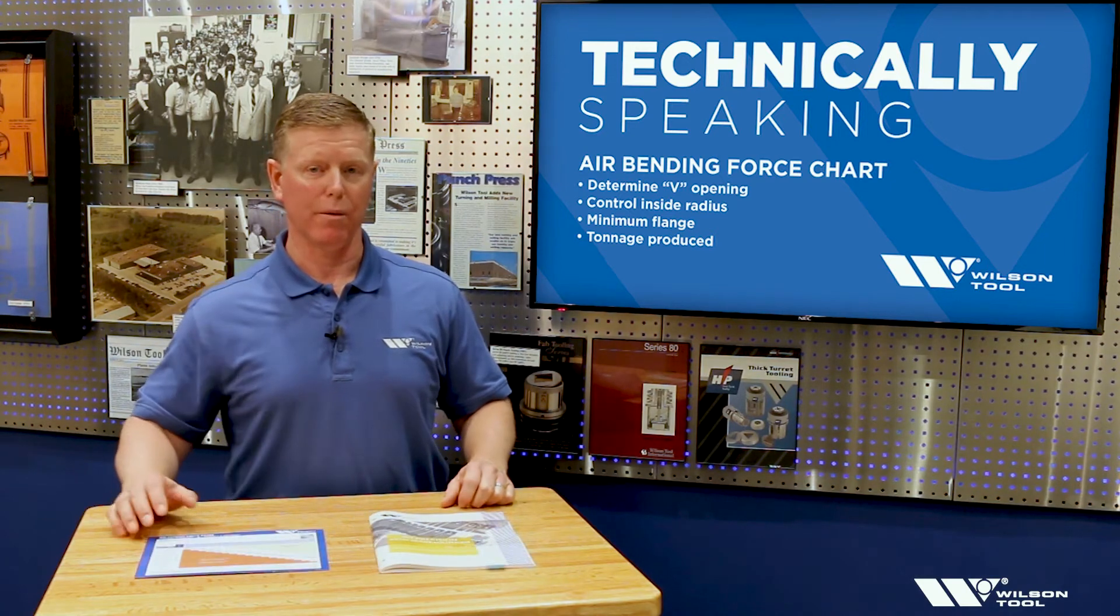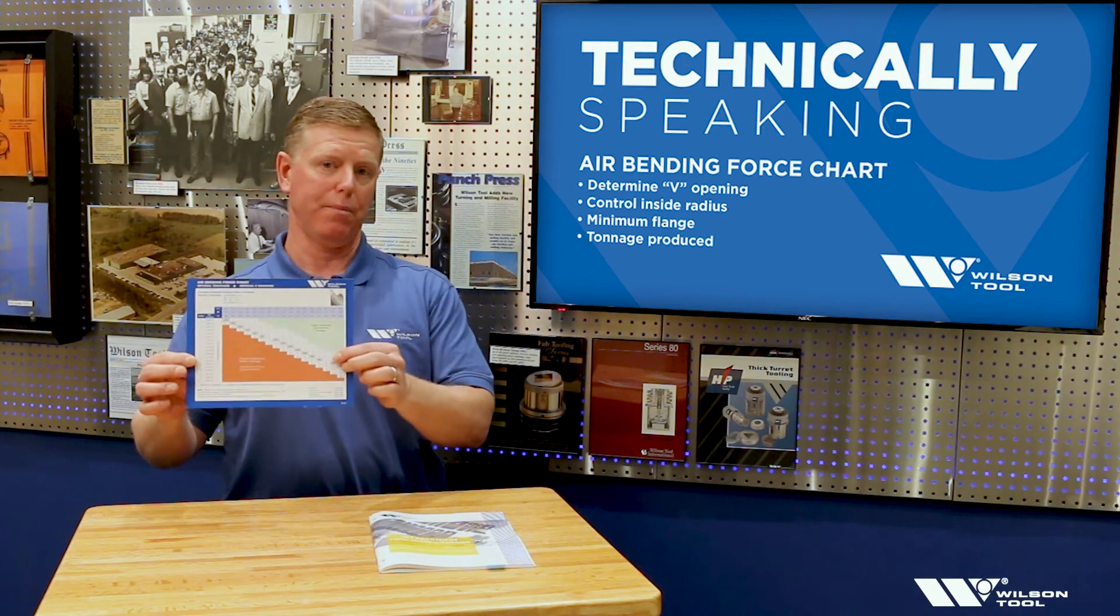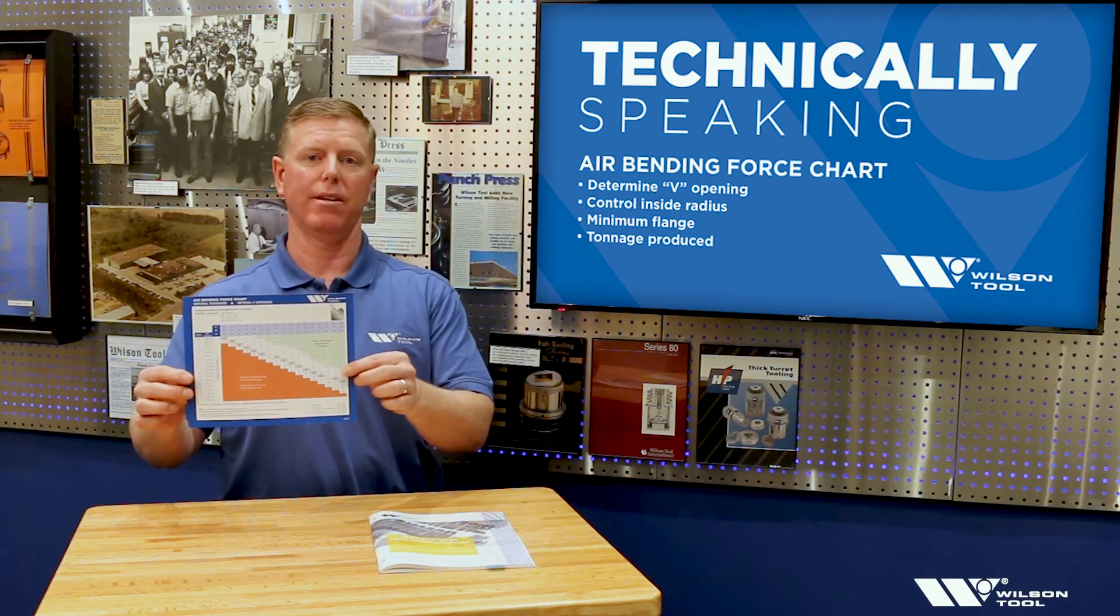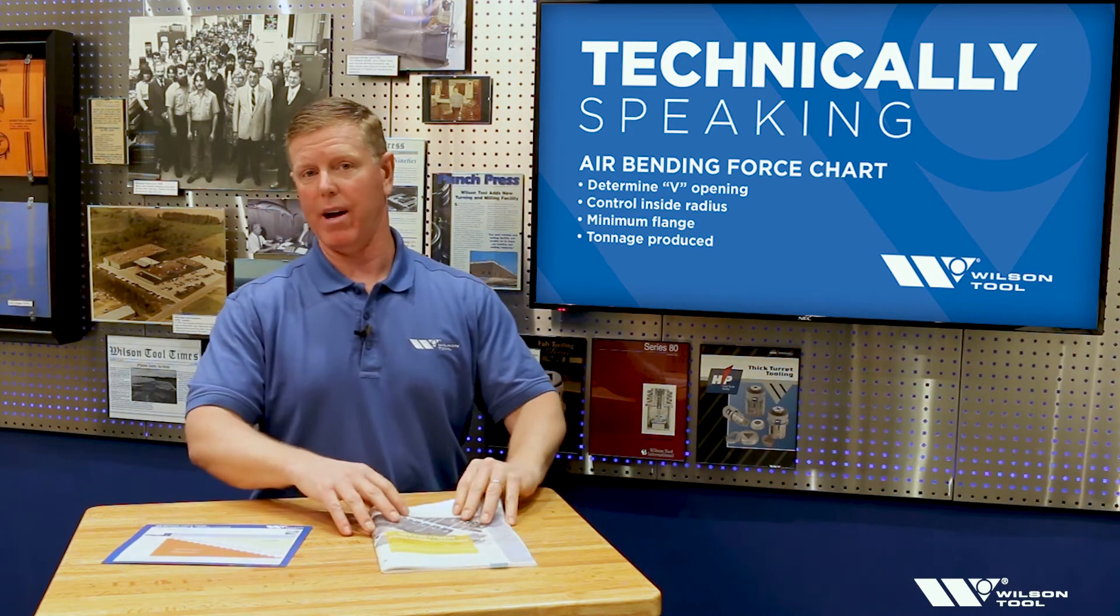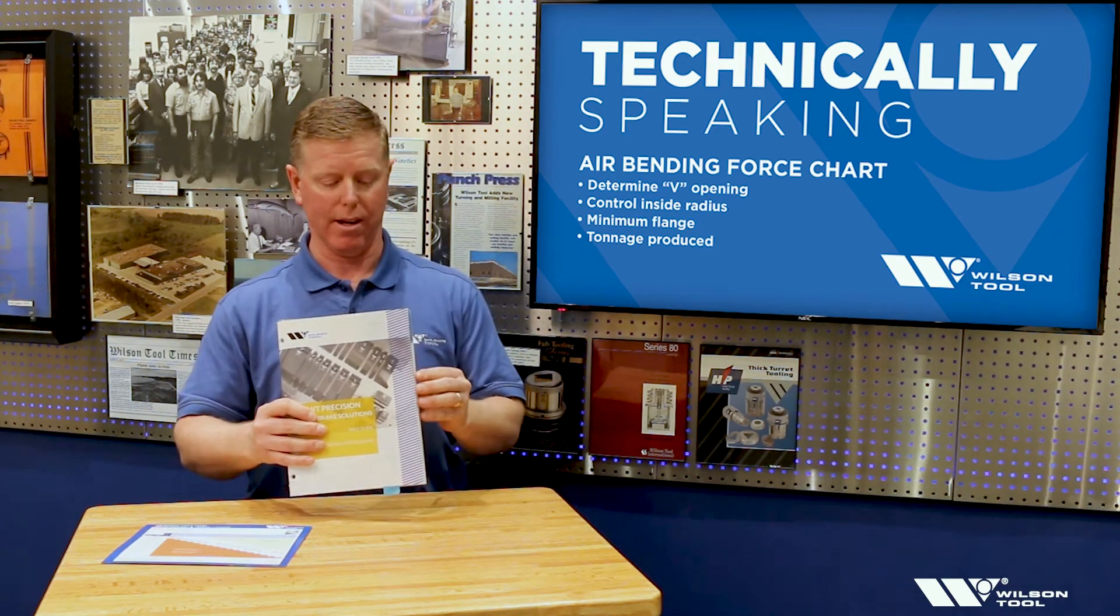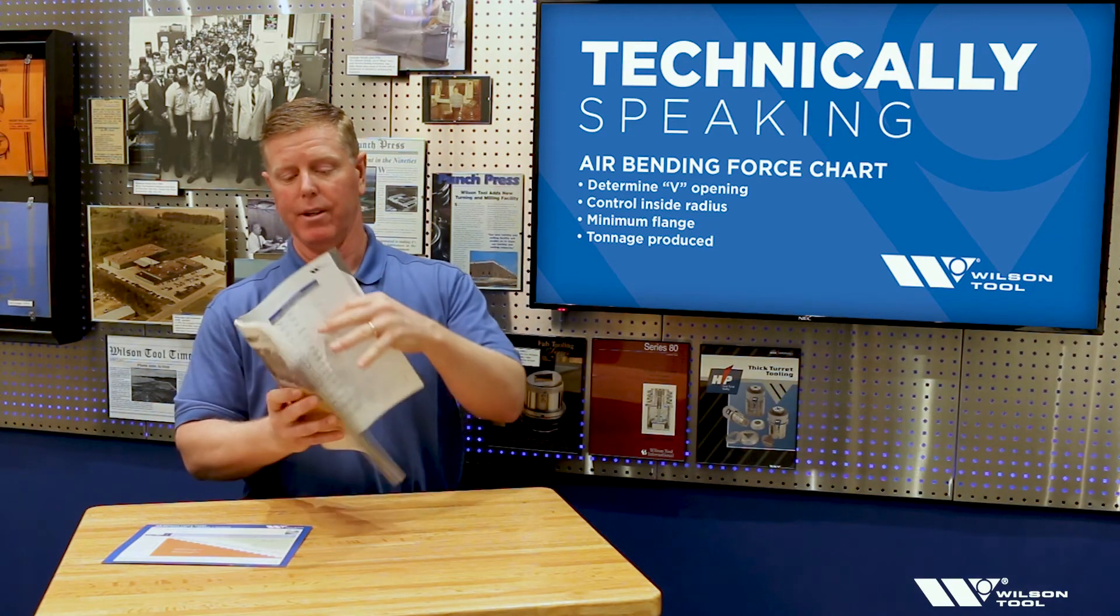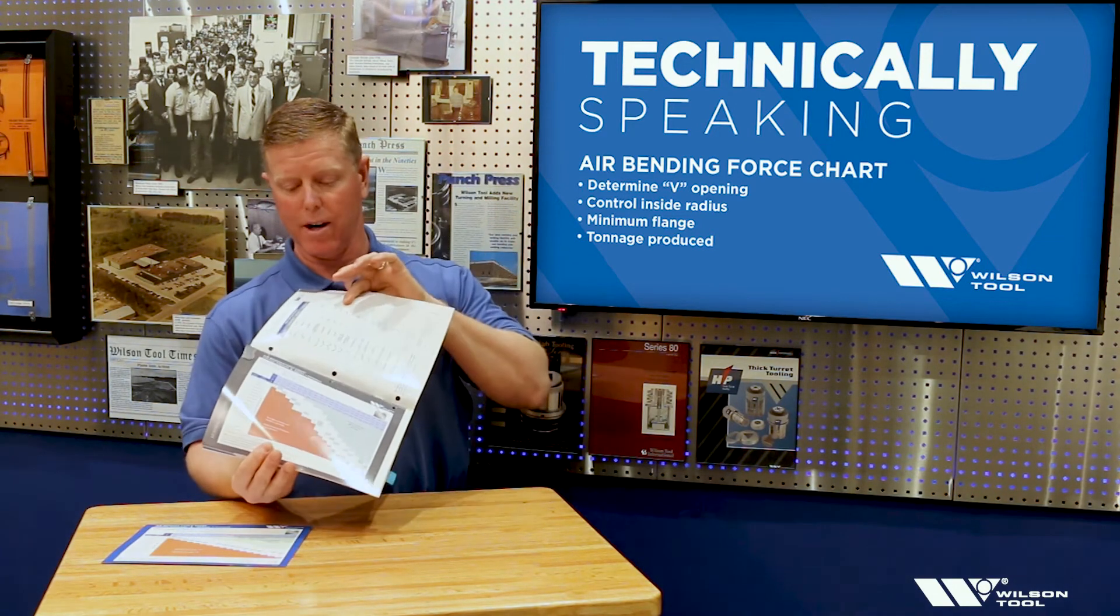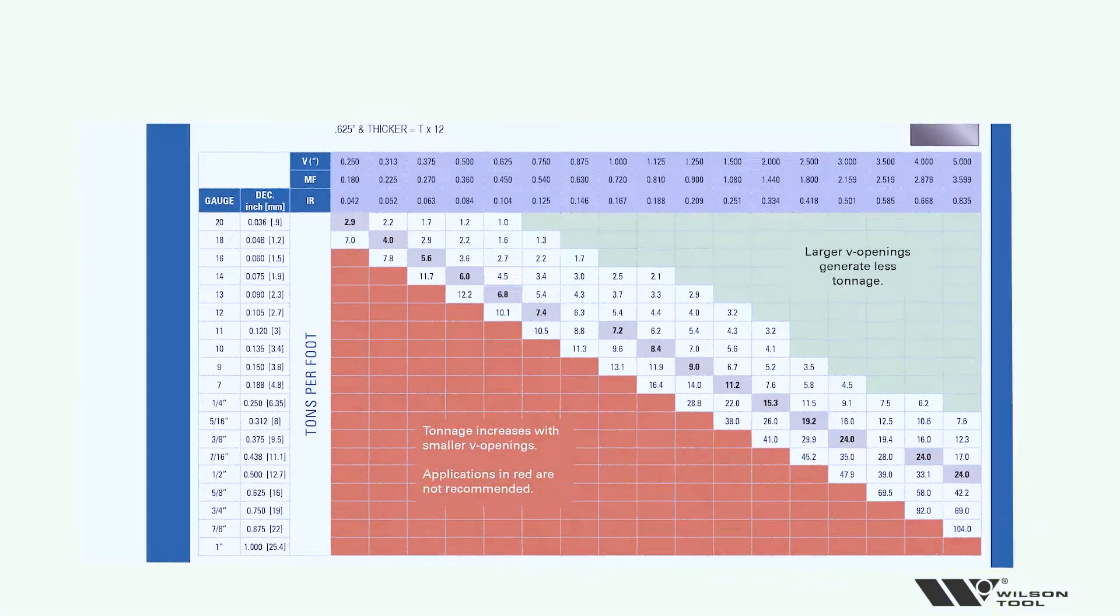If you want to look on while we do this video, you'd find an air bend force chart either on a piece of paper that's possibly been handed to you on your press brake. Maybe more handy would be to grab a catalog, one of the Wilson catalogs. If you go to the back portion of this catalog, you'll see there's a chart in Imperial and in metric. So let's take a look at how we're going to select that V opening.